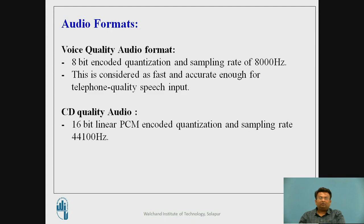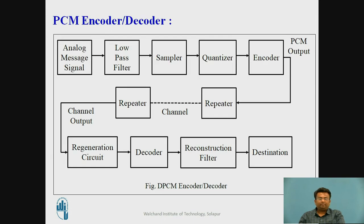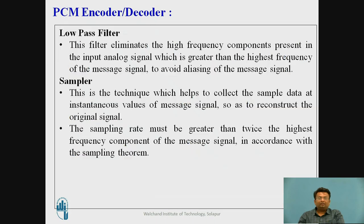In the CD quality format, the 16-bit linear pulse-coded modulation technique is used for quantization and the sampling rate is 44,100 Hz. This is a block diagram of the PCM encoder and decoder.